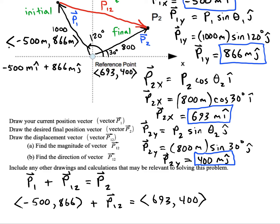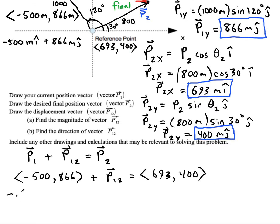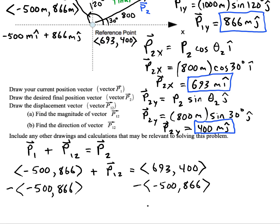So see what I did there. I just took the component form of P1 and I put it in place of P1. And I took the component form of P2 and I put it in place of P2. Now what you want to do is the same thing we would have done with one-dimensional problems is subtract it to the other side. So you get P12 is equal to subtracted components, so 693 minus the negative 500 makes 1193, and 400 minus 866 makes a negative 466. Those are the components of our displacement vector.